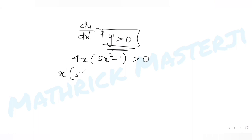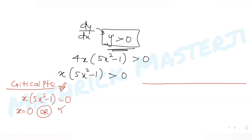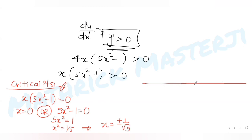For y to be strictly increasing, y' > 0, so 4x(5x² − 1) > 0, which means x(5x² − 1) > 0. To find the critical points, I set this equal to zero. This gives x = 0, or 5x² − 1 = 0, so x² = 1/5, giving x = ±1/√5. So the three critical points are x = −1/√5, 0, and 1/√5.